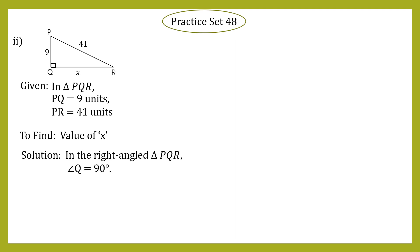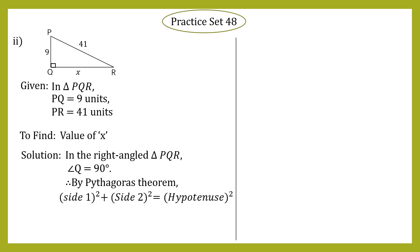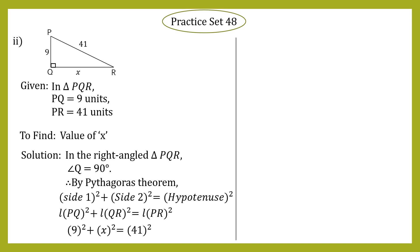Solution: In right-angle triangle PQR, angle Q = 90 degrees. Since the triangle is a right-angle triangle, we apply Pythagoras theorem: side₁² + side₂² = hypotenuse². PQ is side 1, QR is side 2, and PR is the hypotenuse. So: PQ² + QR² = PR², giving us 9² + x² = 41². Now, 9² = 81 and 41² = 1681.